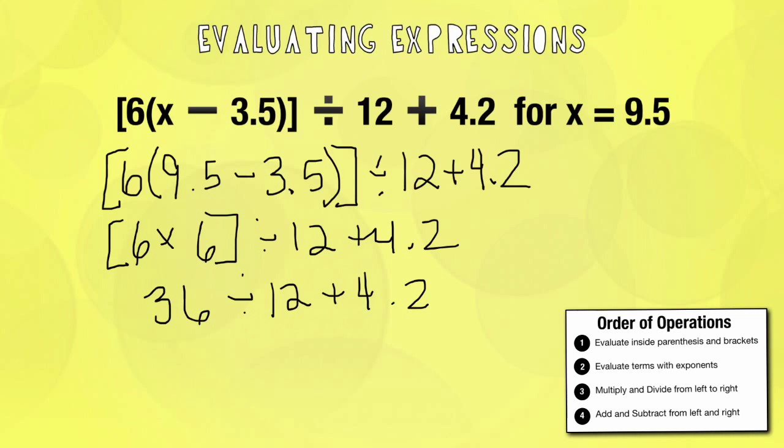36 now divided by 12 is going to give me 3 plus 4.2. And 3 plus 4 and 2 tenths, I should be saying it correctly, is 7 and 2 tenths is my final answer.